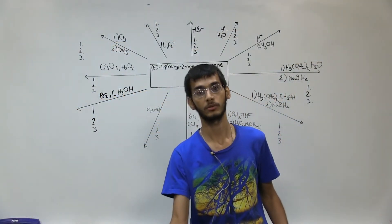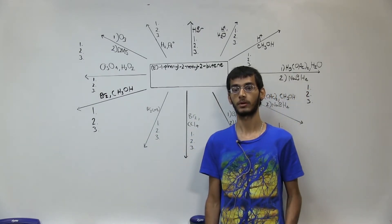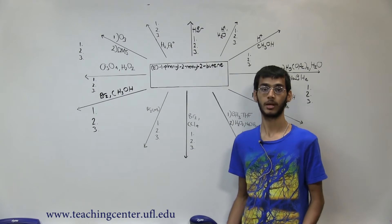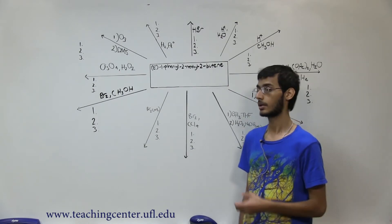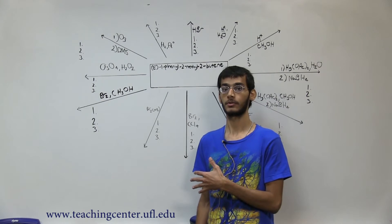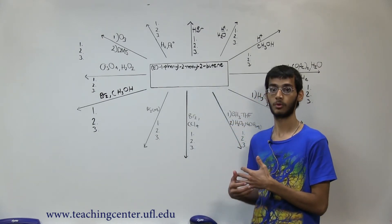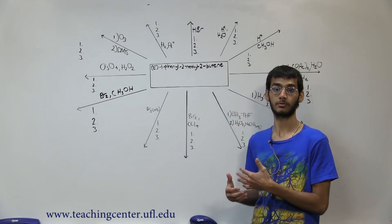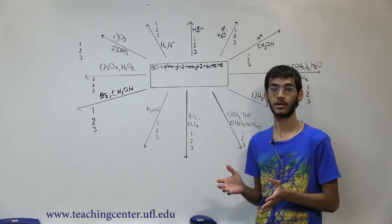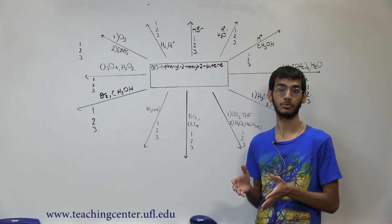Hello everyone. I'm your SI leader for organic chemistry and today we're going to be working on the roadmap for all of our chapter 6 alkene reactions. The PDF for this roadmap — a blank roadmap — is available in the link below. The best way to get something out of this video is to work through the roadmap and fill it in as we go along. I'm going to go pretty fast, so if you need to pause the video and replay certain sections, please feel free to do so.